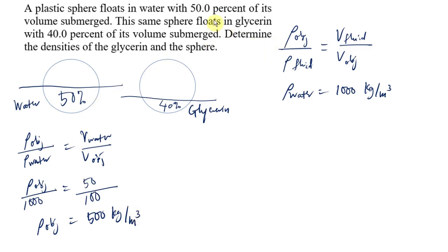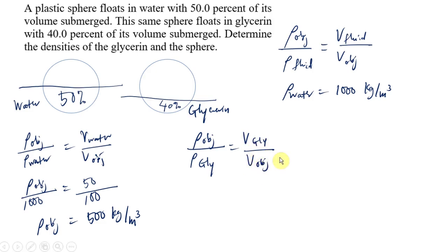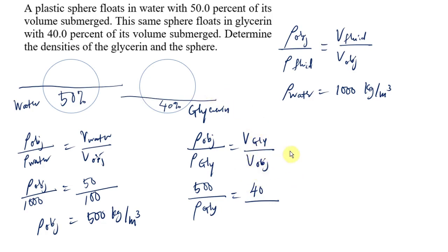The question asks us to find not only the density of the sphere, which we have already obtained, but also the density of glycerin. We repeat the same formula: the density of the object over the density of glycerin equals the volume of glycerin displaced over the volume of the object. The density of the object is 500 kg/m³, and the volume of glycerin displaced is 40% of the total volume, giving a right-hand side of 0.4.